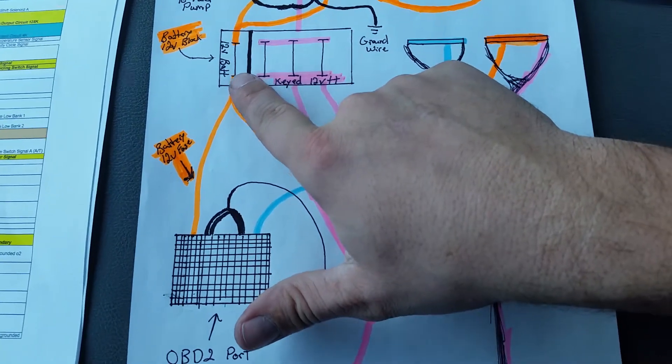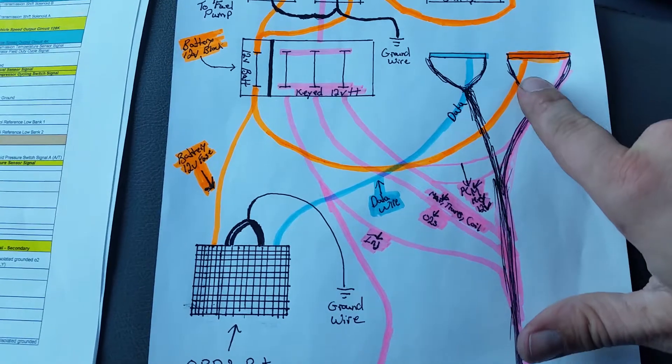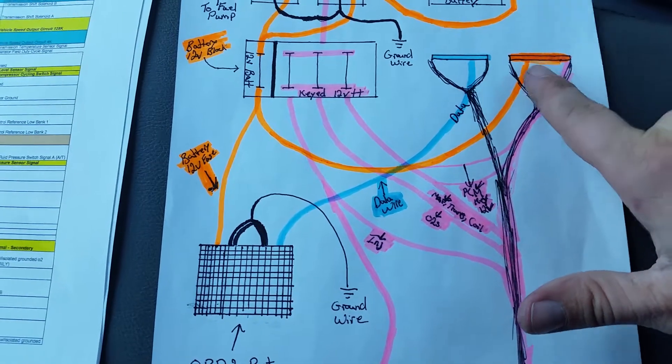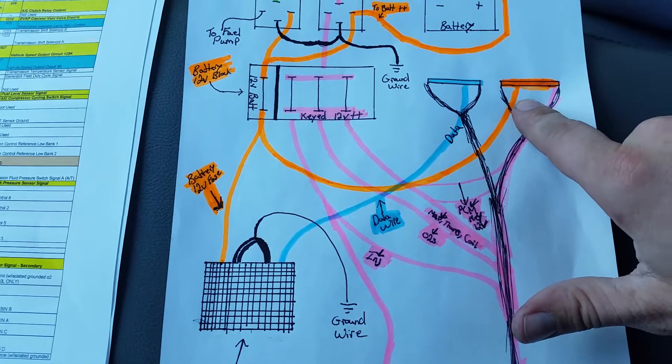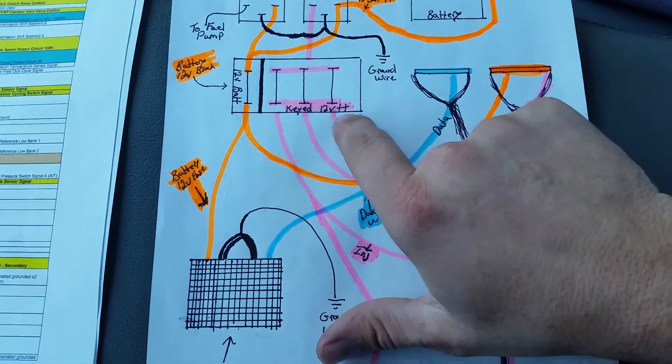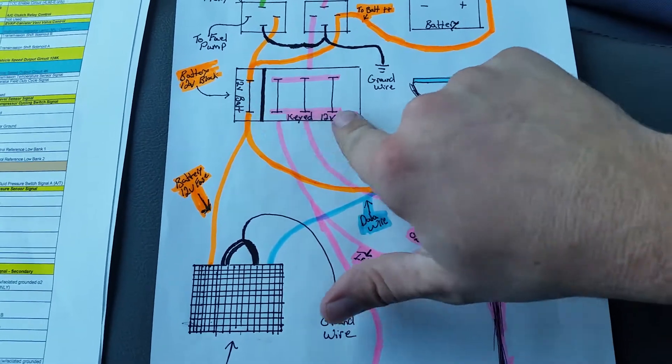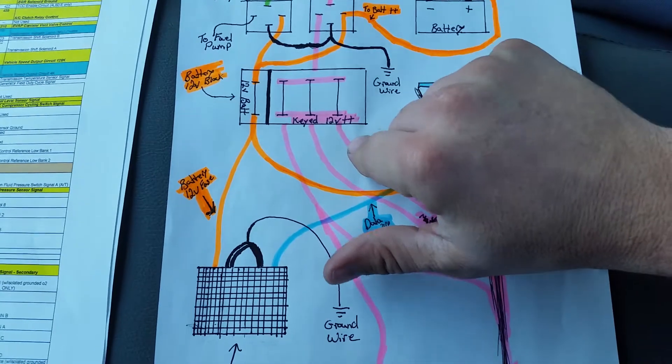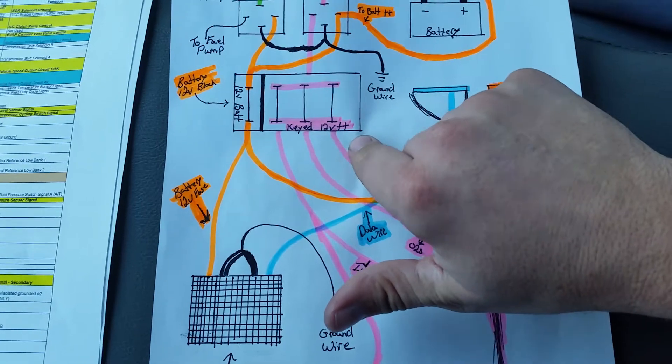The orange constant power needs to run to the red plug on your PCM to keep power to it at all times so it keeps the memory. When you cut your factory plug off that originally ran to a plug that bolted to the stock fuse box under the hood, you'll cut all that off.